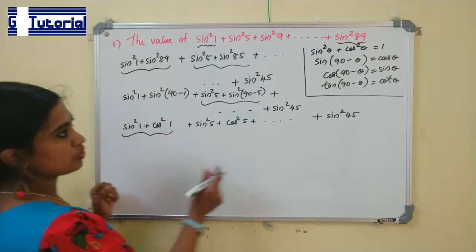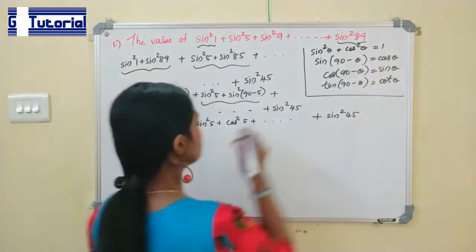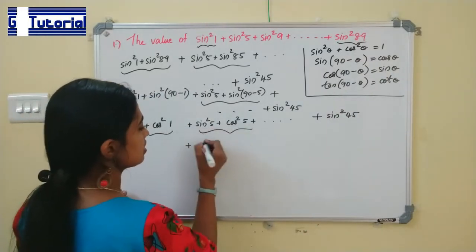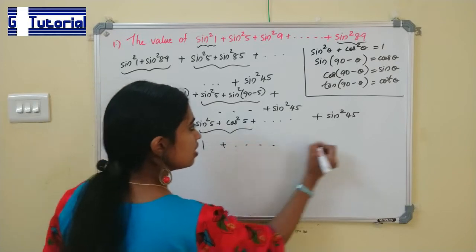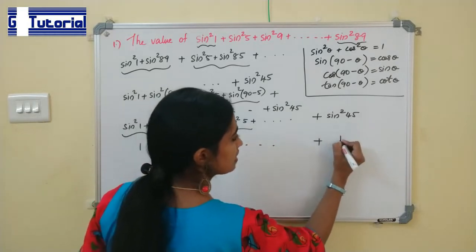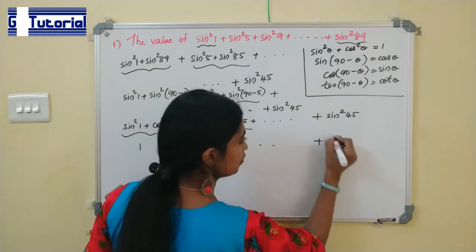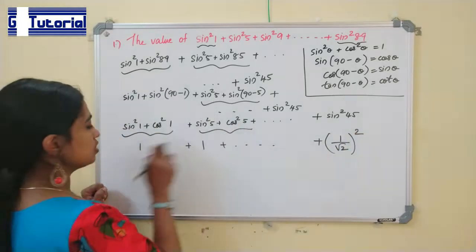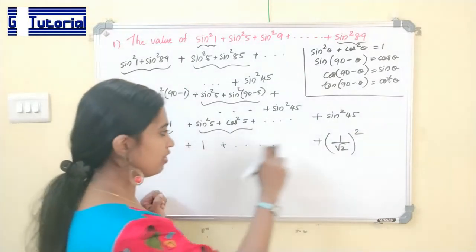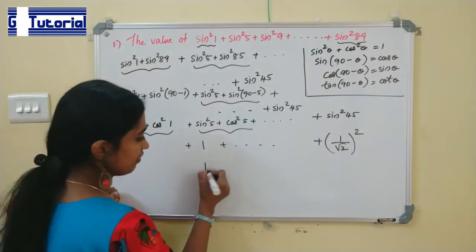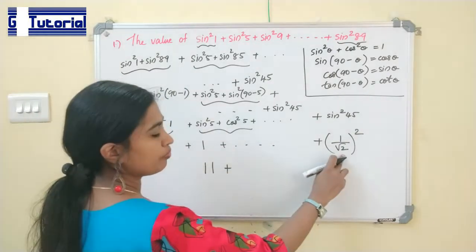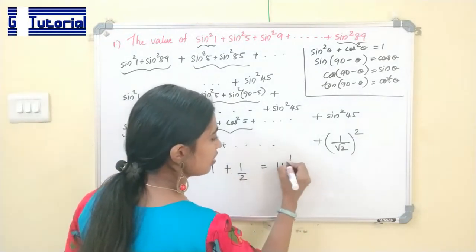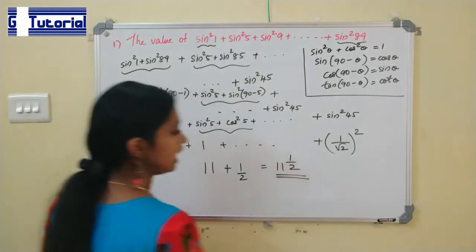We know that sin²θ + cos²θ = 1, so each pair equals 1. There are 11 such pairs, giving 11 × 1 = 11. Plus sin²45: since sin 45° = 1/√2, sin²45° = 1/2. So the total sum is 11 + 1/2 = 11.5. The answer is 11 and a half.